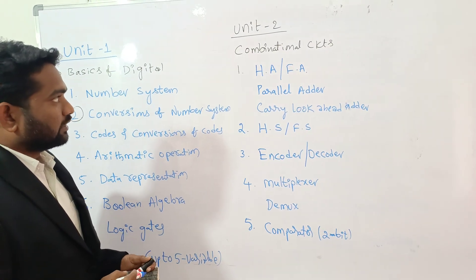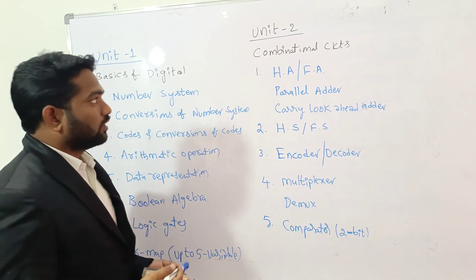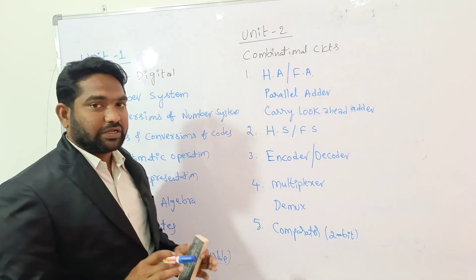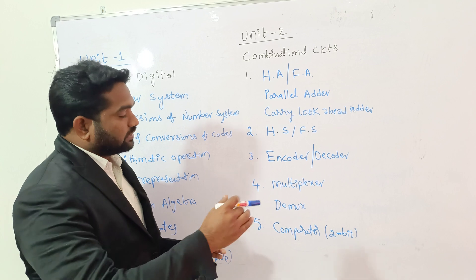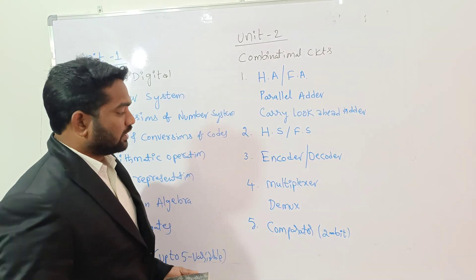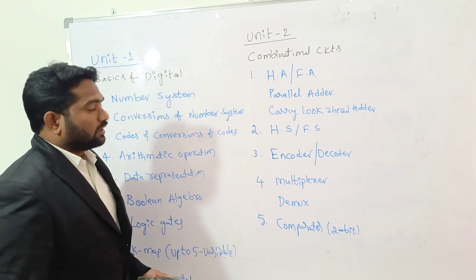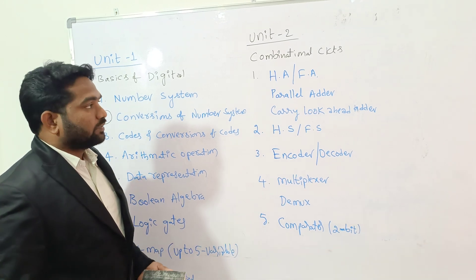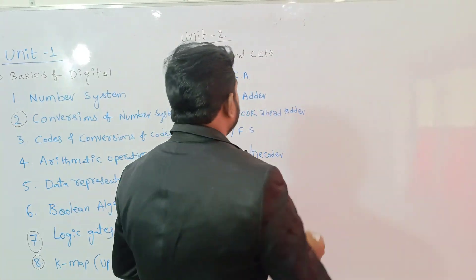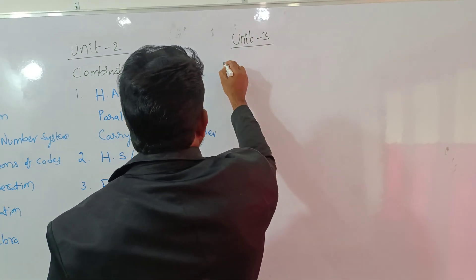These are the concepts of the second unit — Combinational Circuits. A combinational circuit does not have any clock, does not have any kind of memory, and does not have any kind of feedback. After completion of combinational circuits analysis, we will learn the drawbacks of these circuits, and based on those drawbacks we move forward to unit three — Sequential Circuits.